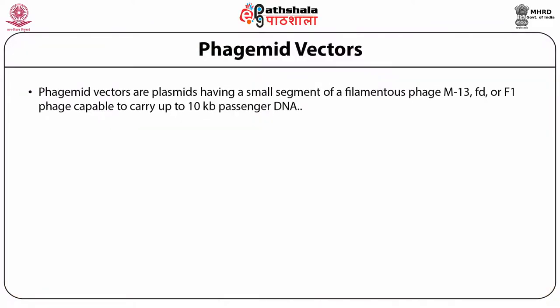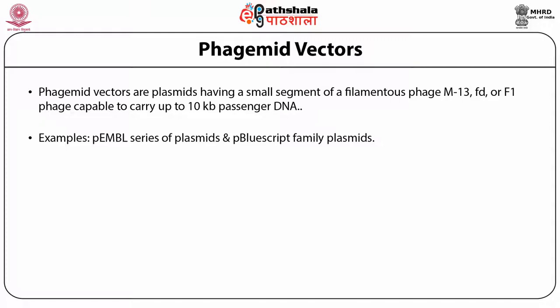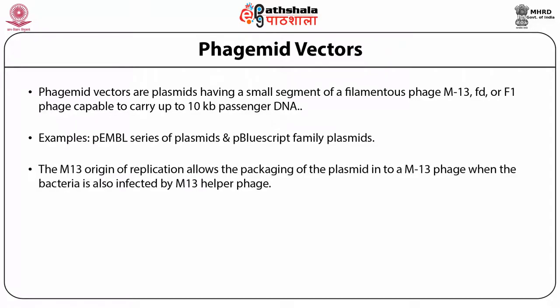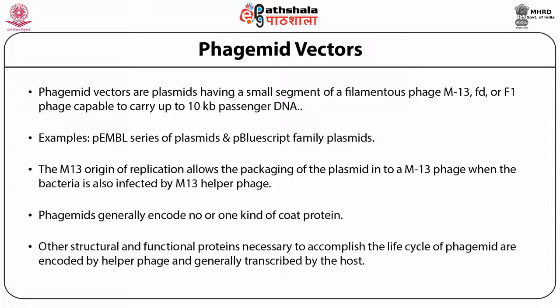Phasmid vectors are plasmids having a small segment of filamentous phage M13, FD, or F1 phage, capable of carrying 10 kb passenger DNA. Examples are EMBL series plasmids and pBluescript family plasmids. The M13 origin of replication allows the packing of the plasmid into an M13 phage when the bacteria is also infected with an M13 helper phage. Plasmids generally encode no or one kind of coat protein; other structural and functional proteins necessary for the life cycle of phasmids are encoded by the helper phage and transcribed by the host.